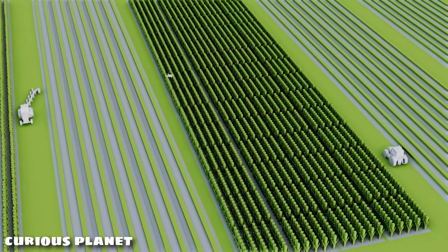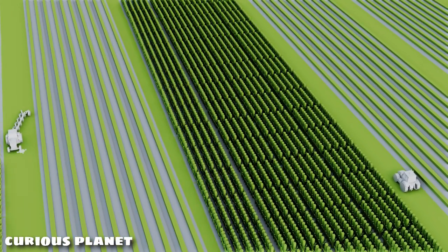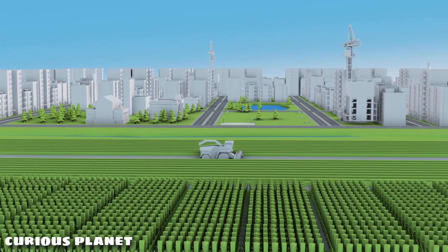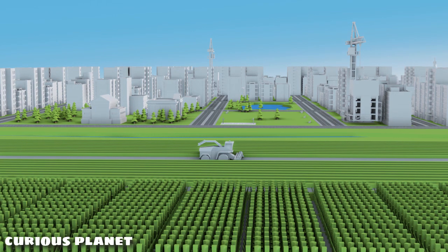These smart systems record data over time such as the color, look, and feel of crops, weather conditions, amount of water in the soil, infestation in crops, and more.